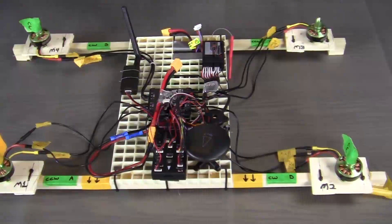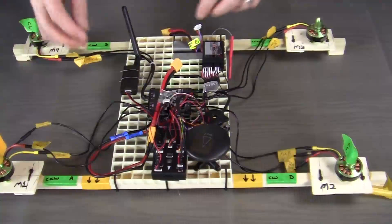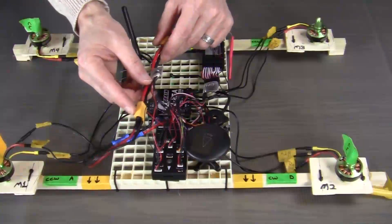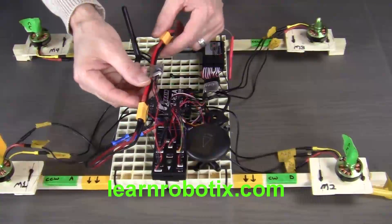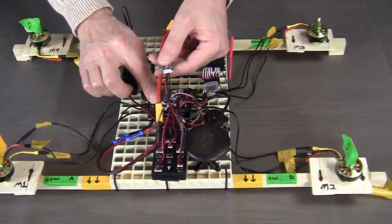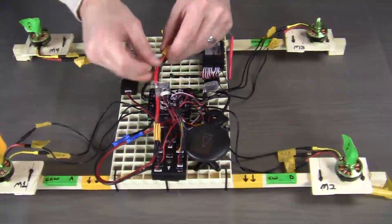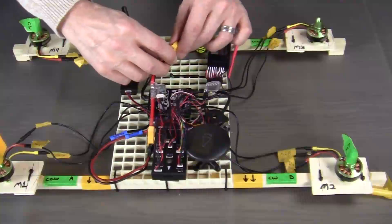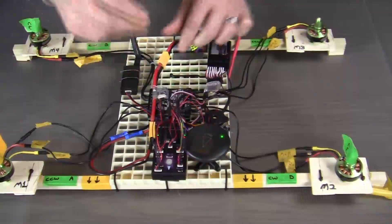Now we can connect power to our system. As you can see, I've already connected the power module to the QBrain 4-in-1 ESC. Now we only have to add some power to the system.